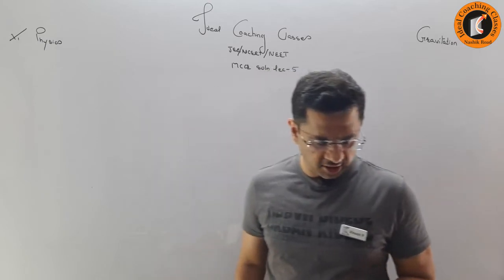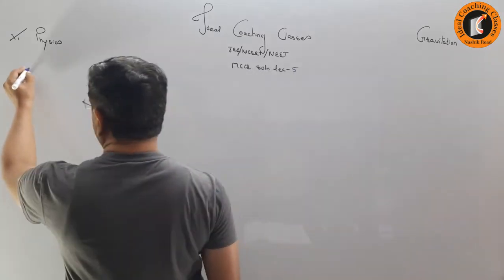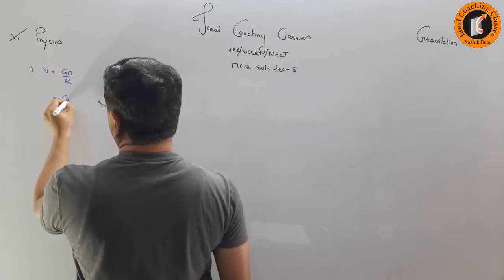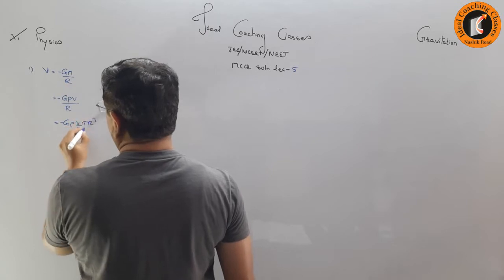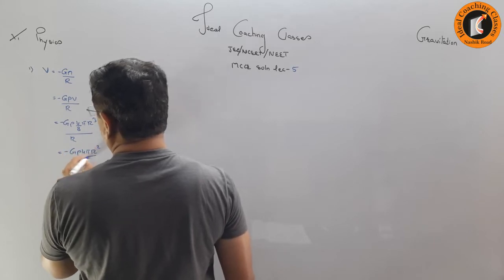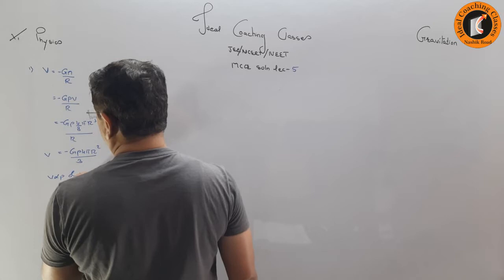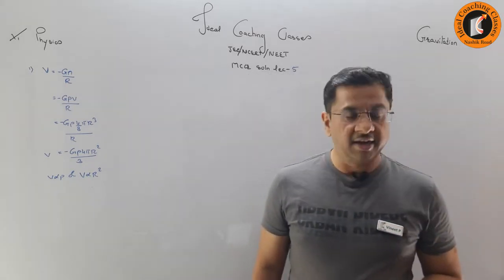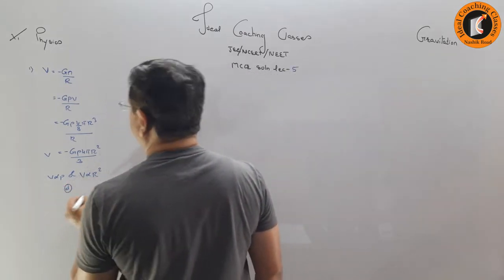Let us start with the first question: the gravitational potential of a body on the surface of the earth is proportional to what? Gravitational potential V equals minus GM/r, that is minus G times density times volume upon r, which gives minus G times rho times 4/3 pi r³ upon r, equal to minus G rho 4 pi r² upon 3. So potential is proportional to density and proportional to r squared. The answer is option D.